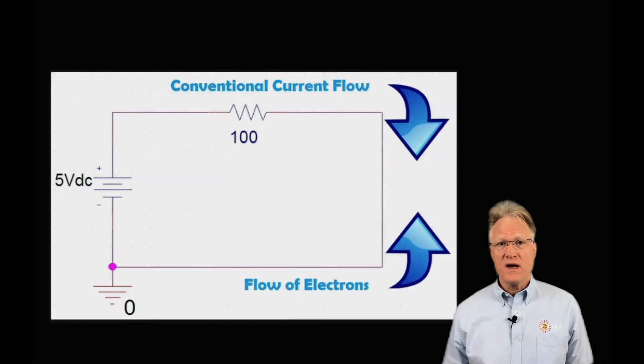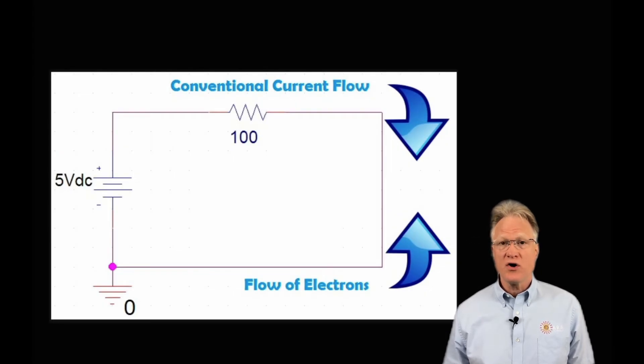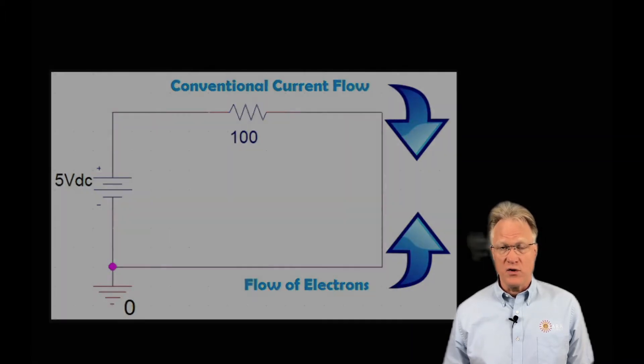Another way to think of a ground is the place to which all current returns — and I'm talking about hole flow here, not electron flow.